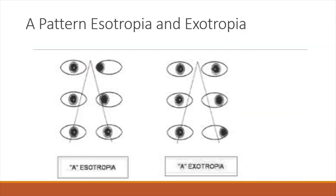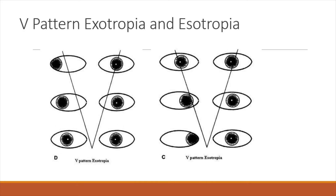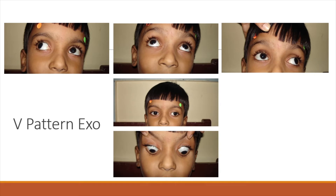This is a diagrammatic representation of how A-pattern esotropia and exotropia looks, and these are diagrammatic representations of V-pattern exotropia and esotropia.